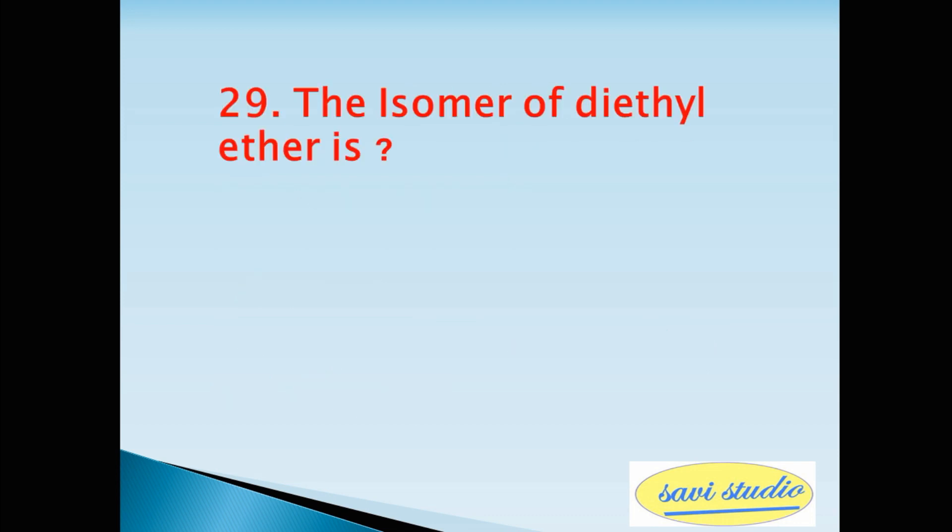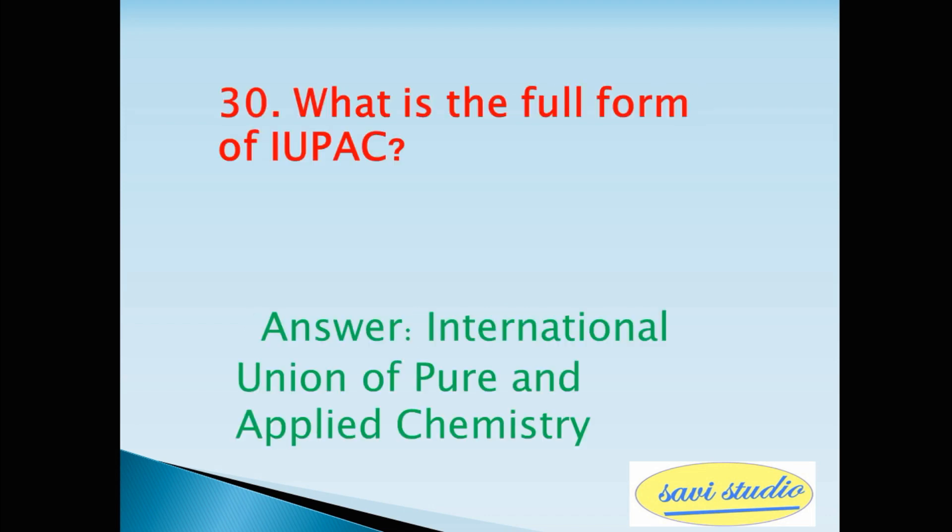Twenty-ninth question, the isomer of diethyl ether is? Answer (CH3)3C-OH. Thirtieth question, what is the full form of IUPAC? Answer International Union of Pure and Applied Chemistry.